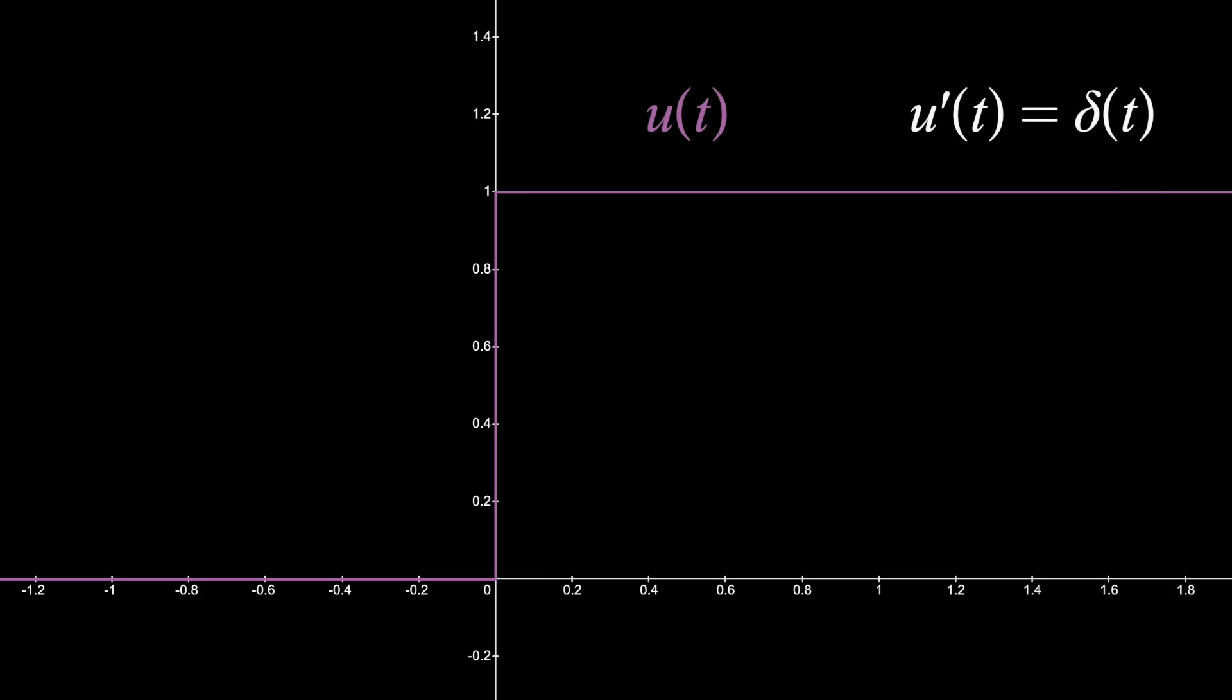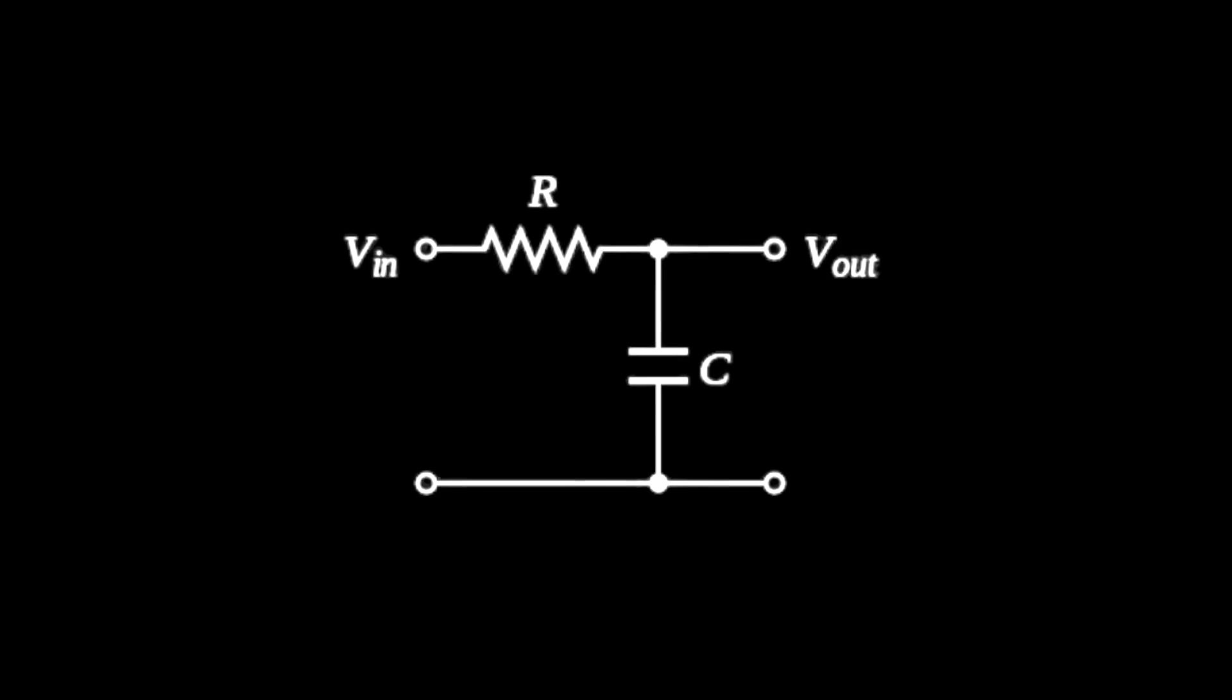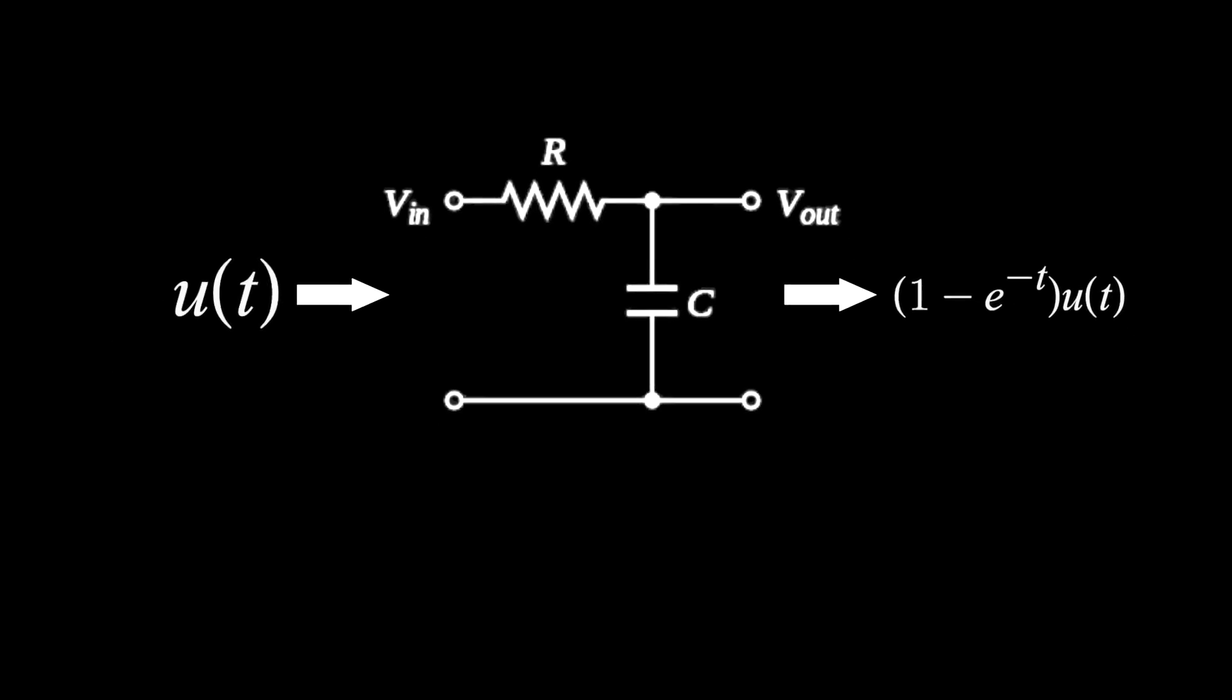So, as a final example, if you have an RC circuit where r and c are one, and you flip on a one volt battery, the capacitor voltage response would be one minus e to the minus t times u of t. Multiplying by u of t just means y is zero for all negative values of t. Otherwise you're multiplying by one.